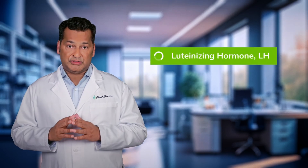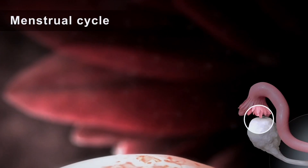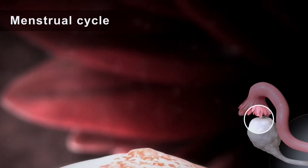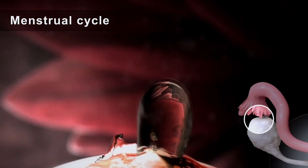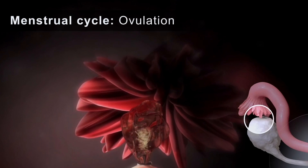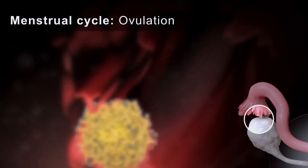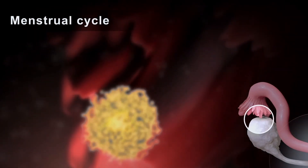In the middle of the cycle, a second pituitary hormone called luteinizing hormone, or LH, is released into the blood, which causes the dominant egg follicle to burst open and release the egg into the fallopian tube — a process called ovulation.